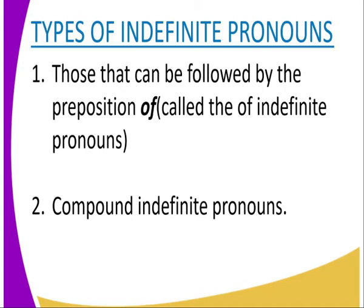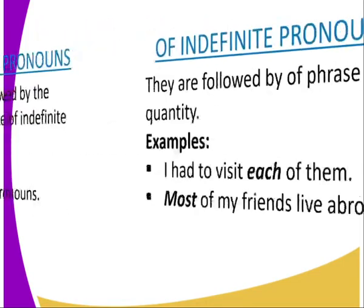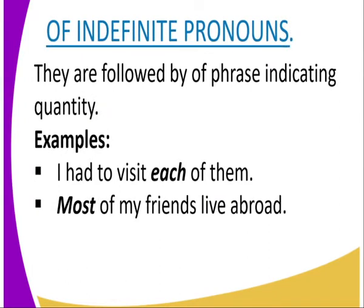We have two types of indefinite pronouns: those that can be followed by the preposition 'of', called the 'of' indefinite pronouns, and the compound indefinite pronouns. The 'of' indefinite pronouns are followed by an 'of' phrase, with 'of' indicating quantity. For example: 'I had to visit each of them' — 'each' indicates quantity and comes before 'of'. Another example: 'Most of my friends live abroad.'